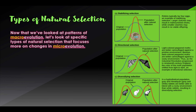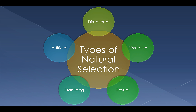Greetings everyone, and welcome back to the final installment of our lecture on evolution by natural selection. Today we're going to discuss types of natural selection, and also other scientists that contributed to our understanding. We've talked about patterns of macroevolution, but to understand how macroevolution occurs, you have to understand how microevolution occurs, because small changes over time add up to big changes.